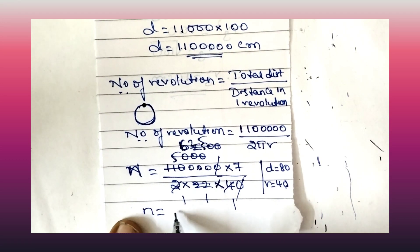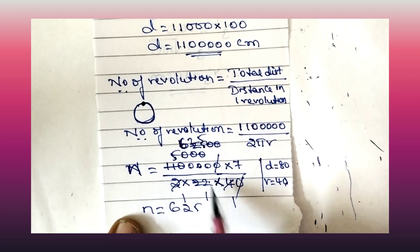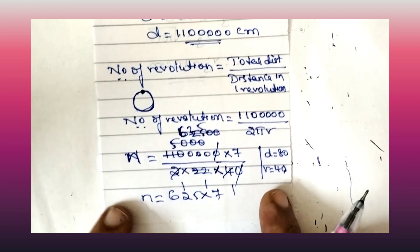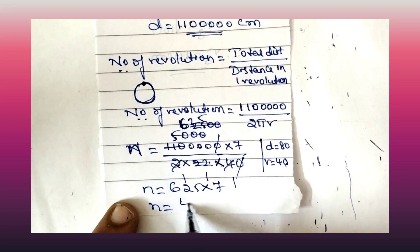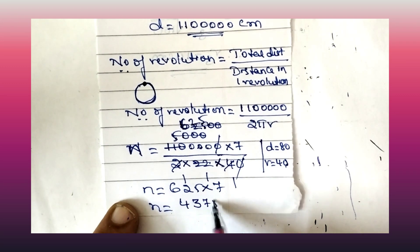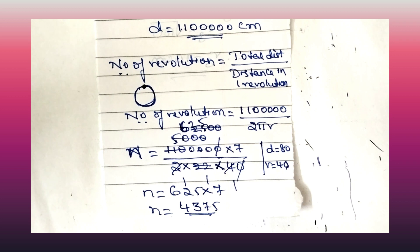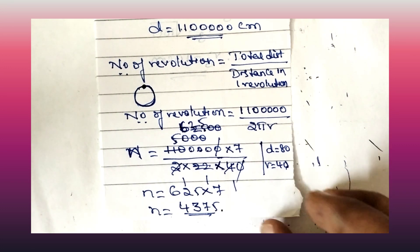After calculation, the number of revolutions comes to 625 × 7 = 4,375. So in 10 minutes, when a car moves at a speed of 66 km per hour, the number of revolutions of the wheel is 4,375 revolutions.